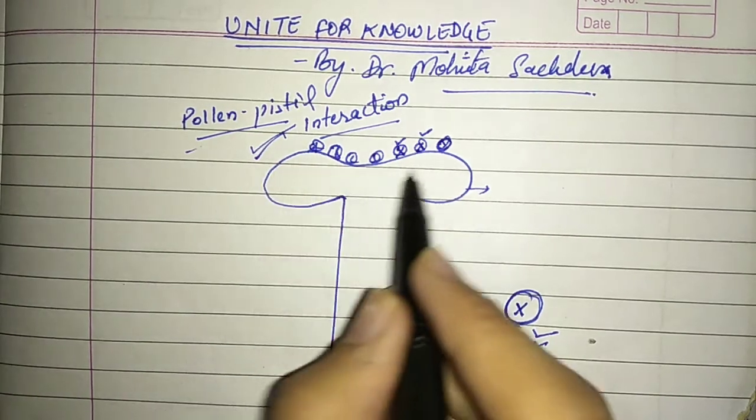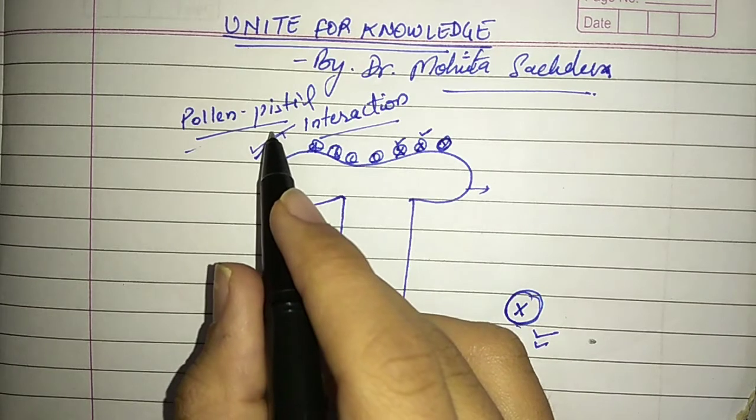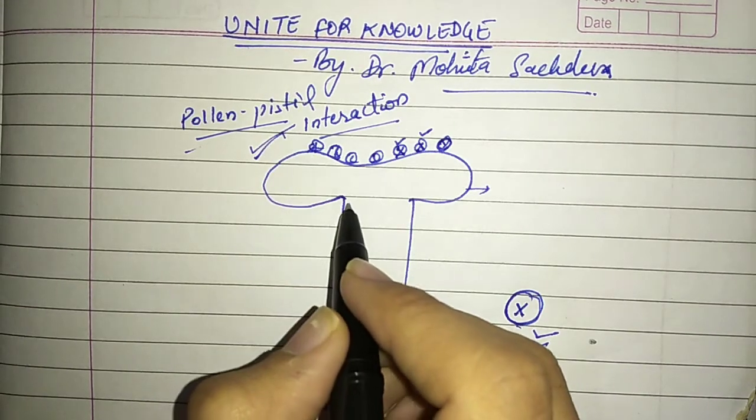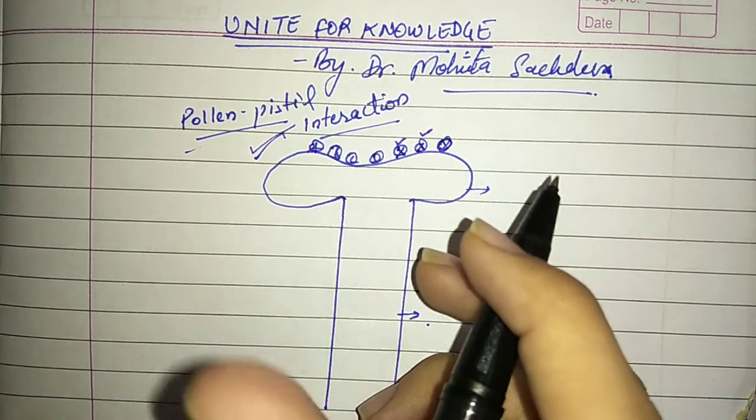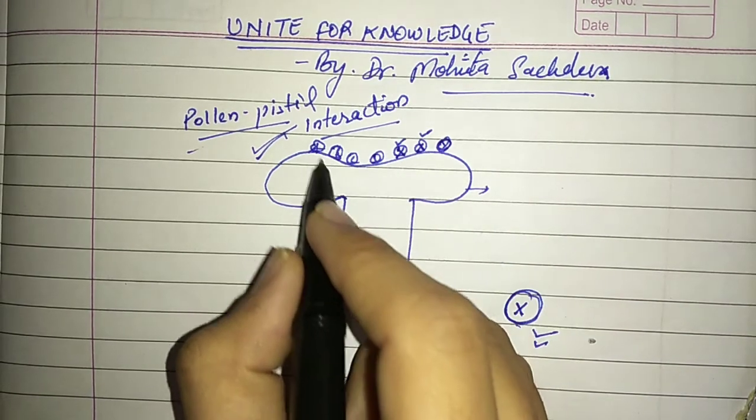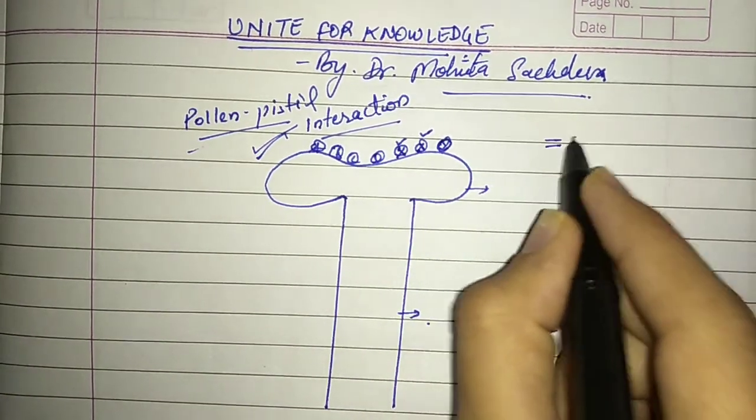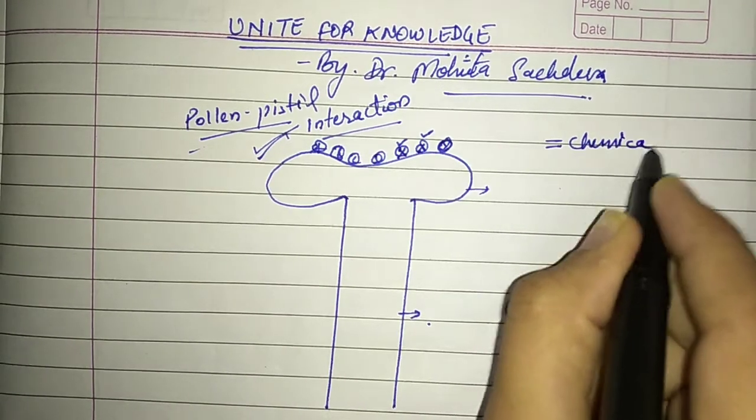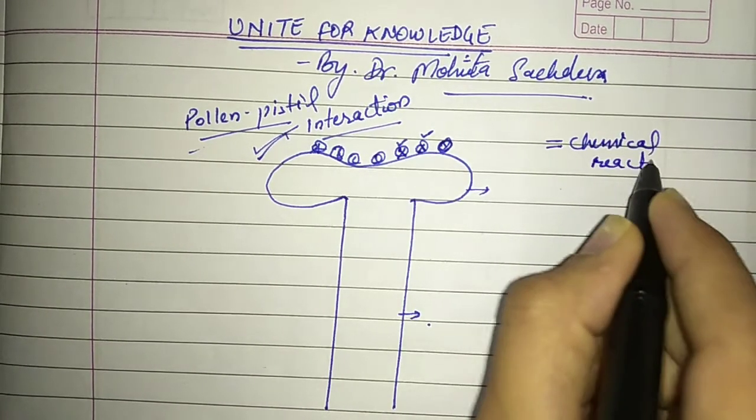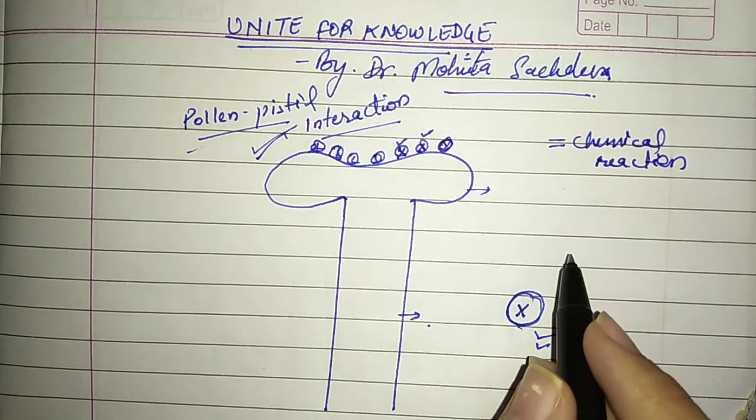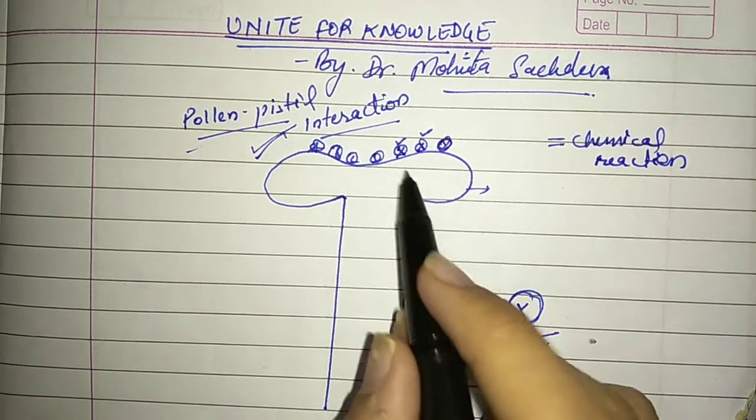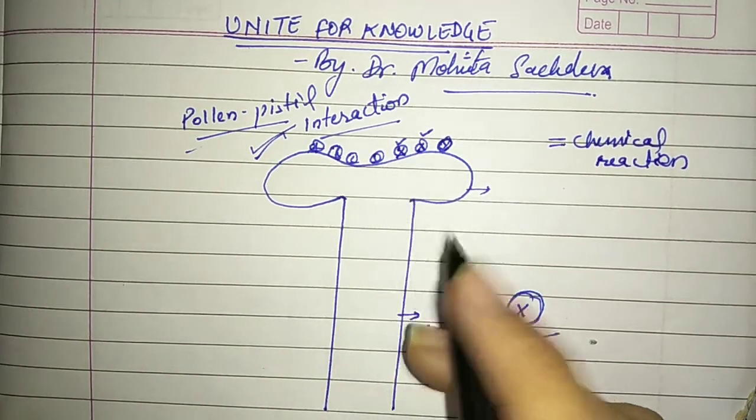So what will happen here is that stigma and pollen grains will secrete some chemicals which will have some reaction, some products will form. A chemical reaction is happening here.